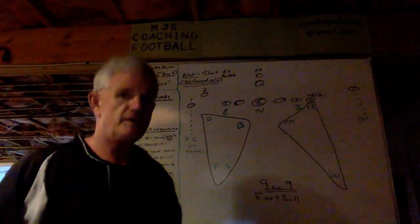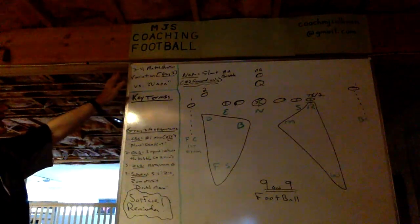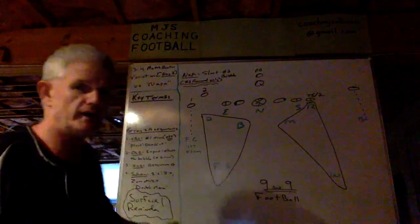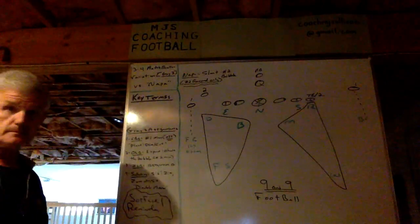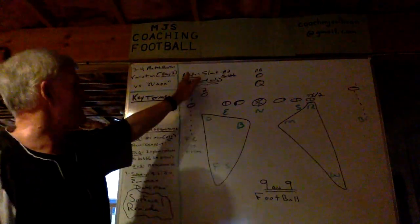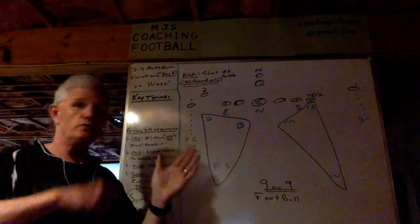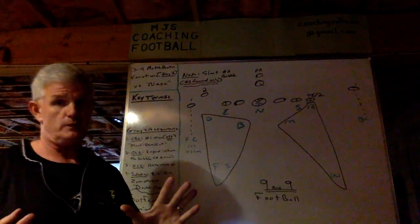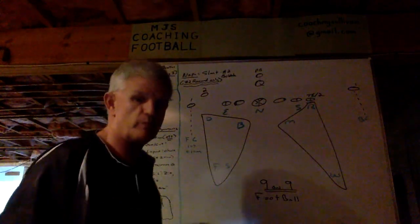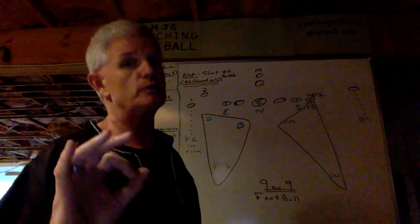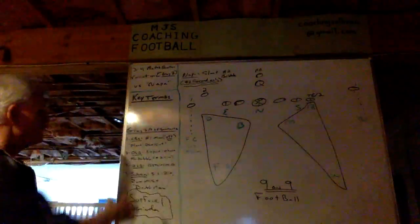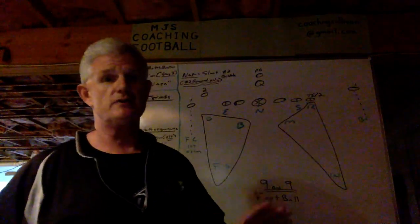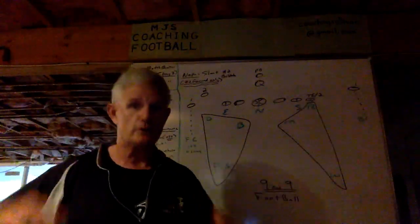In this presentation, I want to share with you our match quarters variation that we call gray three — how we defend against Napa. Napa is a slant with the number two running a bubble, therefore number two removed only. So over here will be the key terms so you can better understand how we defend against Napa in our match quarters variation that we call gray three.